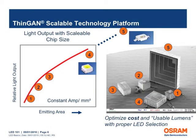The thin film or thin GaN technology is scalable with the chip size. The relative light output from the semiconductor chip increases almost linearly with the emitting area. This enables optimization of the usable lumens and cost with the appropriate chip size.